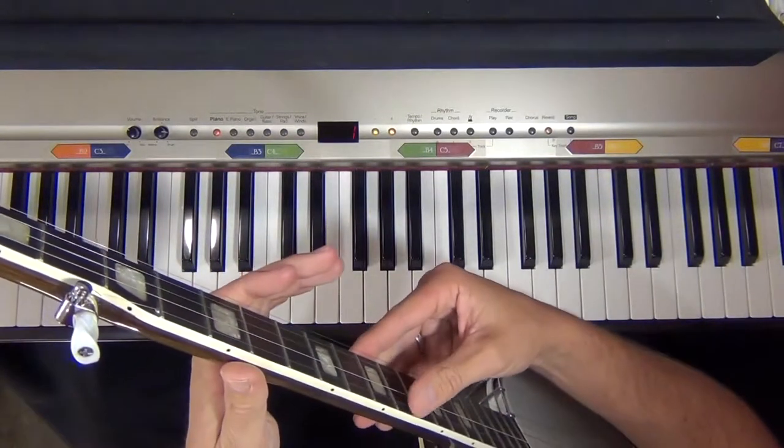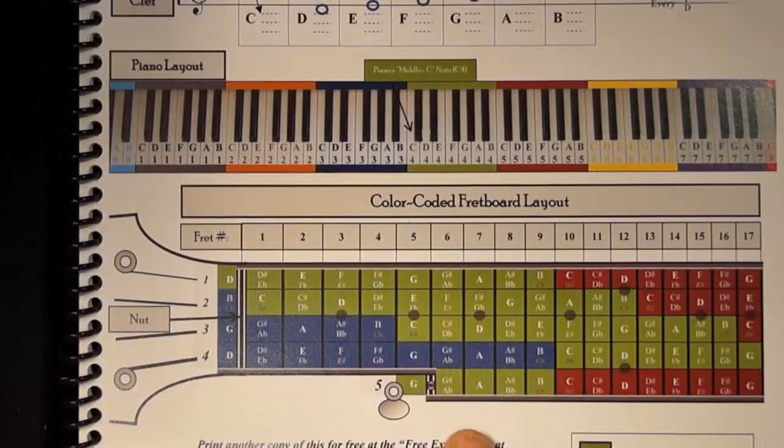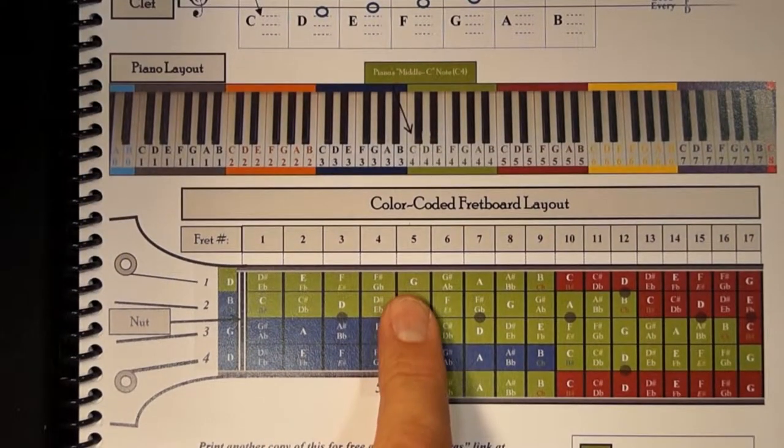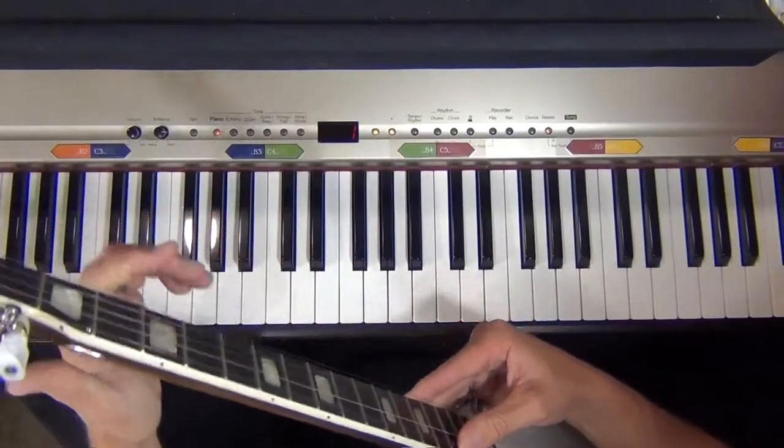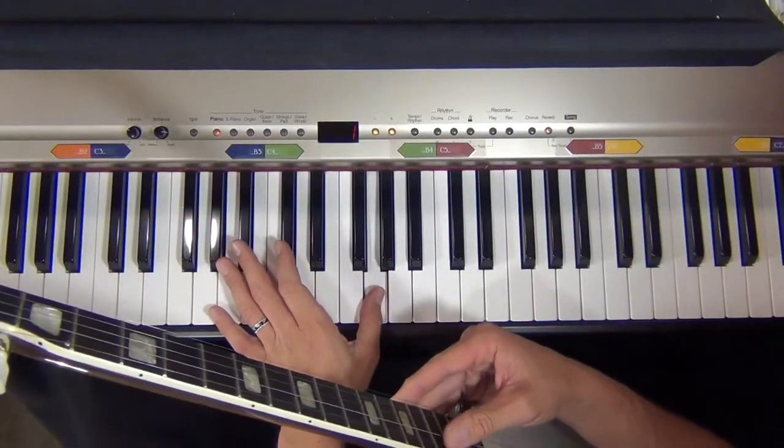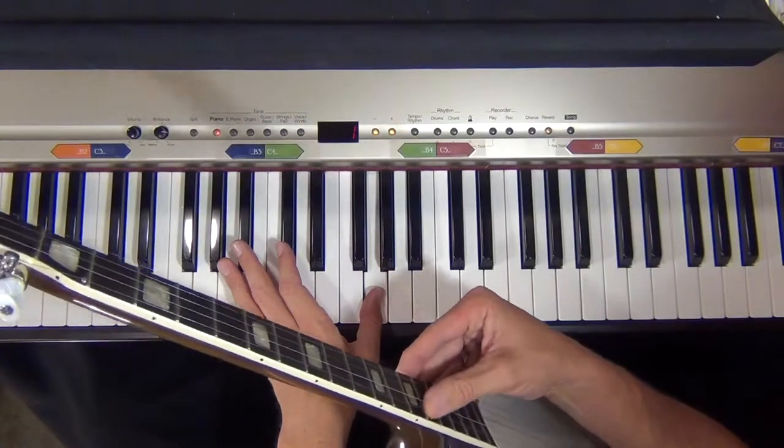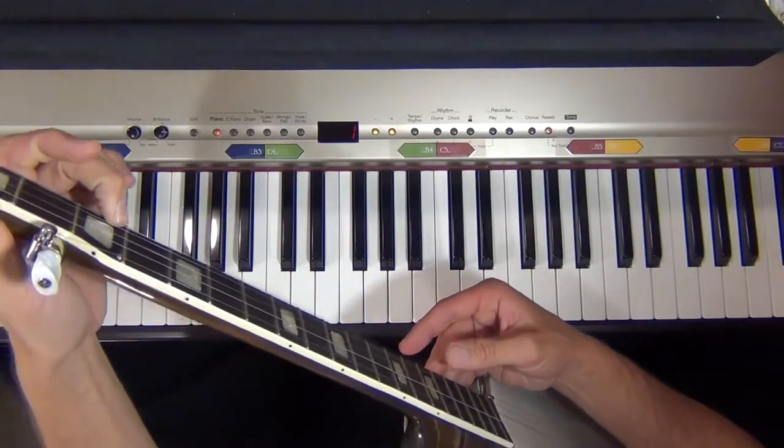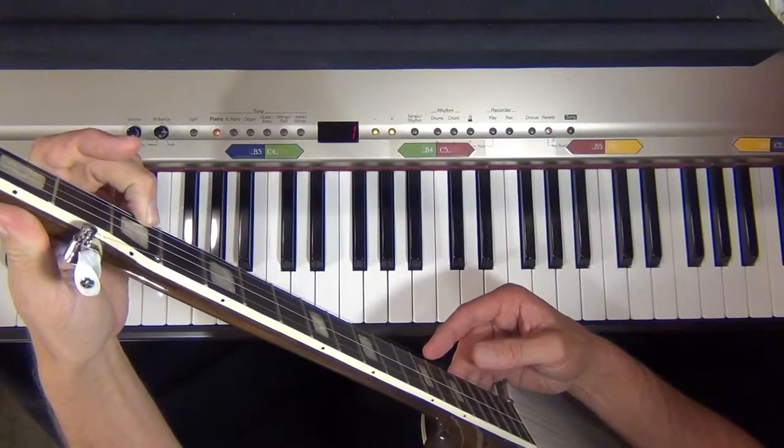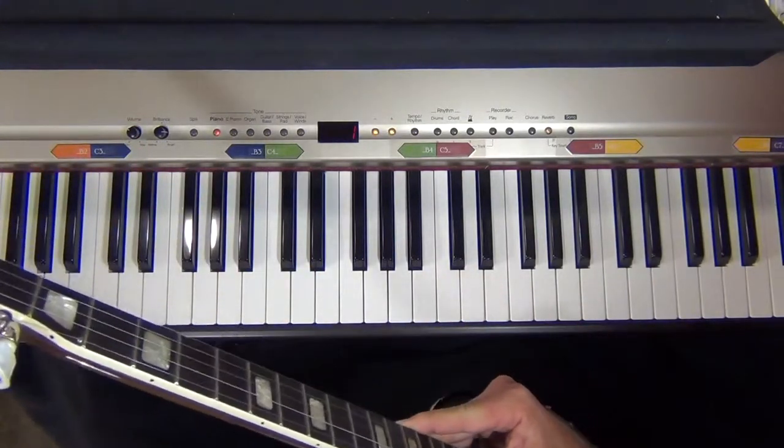This fifth string G up here is going to be the same G note as the first string on the fifth fret. Fifth string open is going to be the same as this, if my banjo was holding its tune.